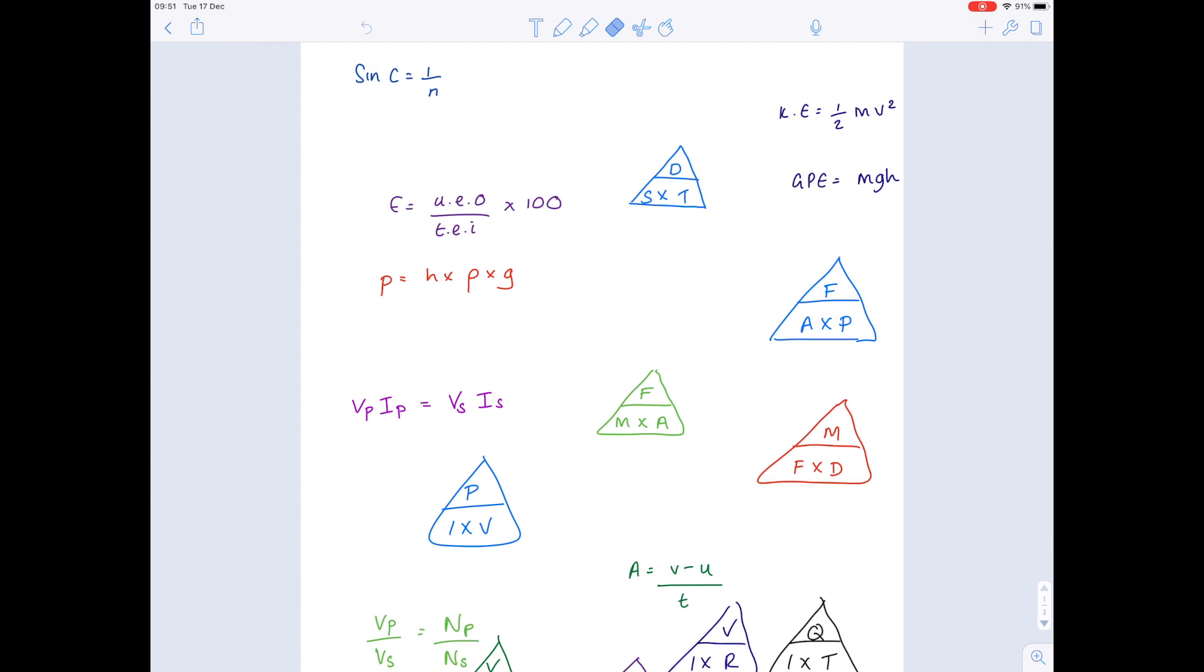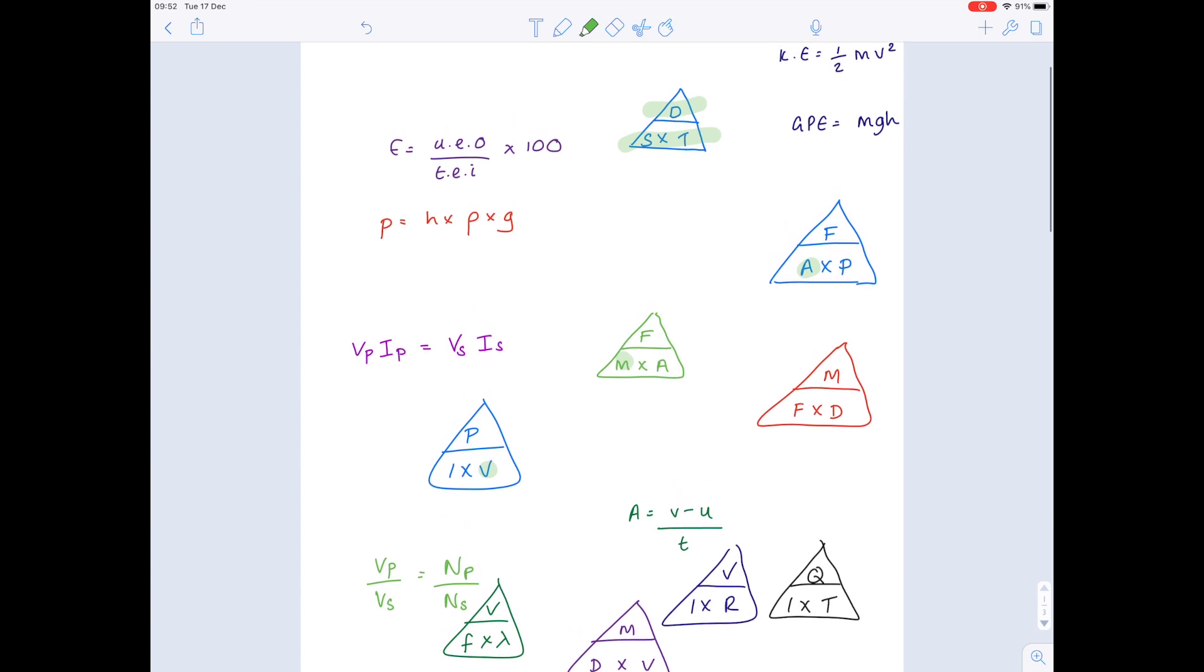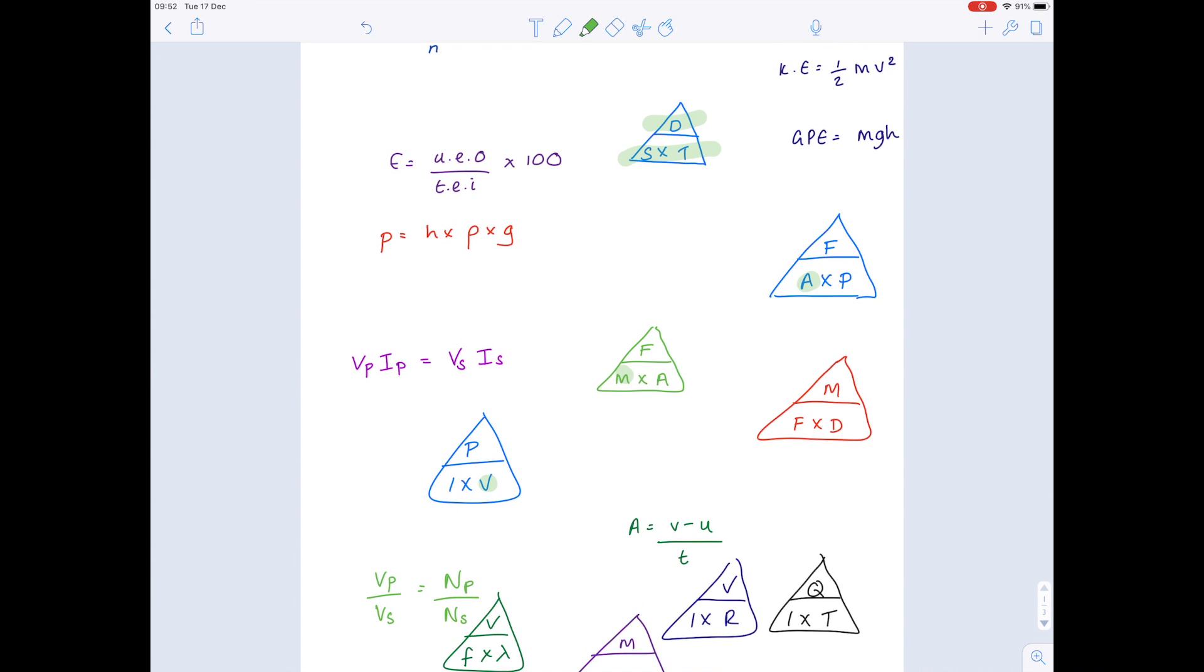But what are those equations? In a previous video I talked through all the various physics equations and showed you how I learned them. Here they are summarized, and this is exactly what I would be drawing at the start of my paper. We've got distance equals speed times time, area equals force divided by pressure, voltage equals power divided by current, and all the different versions.